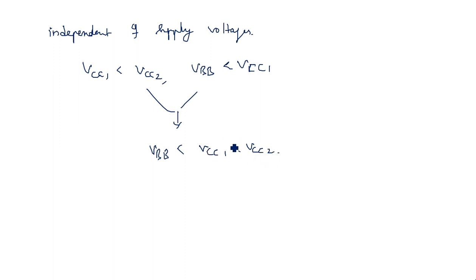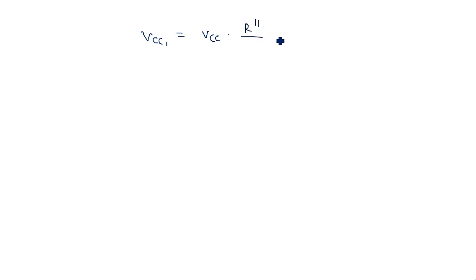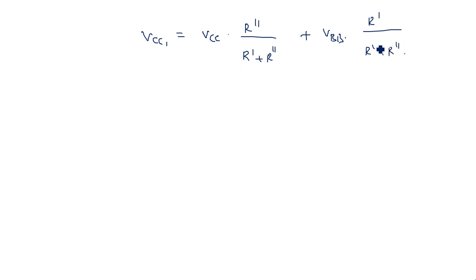Since capacitor C is a bypass capacitor, it helps maintain VBB as a constant value. The collector resistance Rc1 is a parallel combination of two resistors: Rc1 equals R-prime times R-double-dash divided by (R-prime plus R-double-dash). Therefore Vcc1 equals Vcc times R-double-dash divided by (R-prime plus R-double-dash), plus VBB times R-prime divided by (R-prime plus R-double-dash). This gives the calculation of supply voltage Vcc1 and the time period.